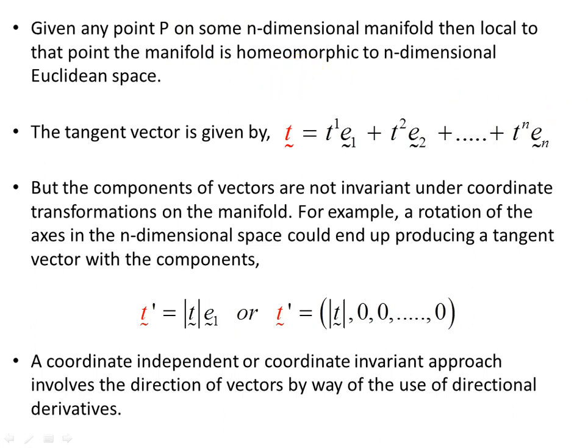Given any point p on some n-dimensional manifold, then local to that point the manifold is homeomorphic to n-dimensional Euclidean space. Take an arbitrary point p on any manifold — at that point and around it, the manifold looks roughly flat like Euclidean space. There's a mapping from that point and its local region that can be mapped to Euclidean space. That lies behind the definition of manifolds.